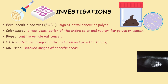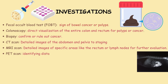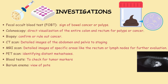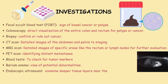MRI scans offer detailed images of specific areas such as the rectum or lymph nodes, facilitating further evaluation of potential abnormalities. PET scans play a crucial role in identifying distant metastases, helping determine the spread of cancer. Blood tests are conducted to check for tumour markers, providing additional information about the presence and characteristics of colorectal cancer. Barium enemas provide a visual examination of potential abnormalities in the colon and rectum. Endoscopic ultrasound is utilised to examine deeper tissue layers near the colon or rectum, offering a more detailed assessment.